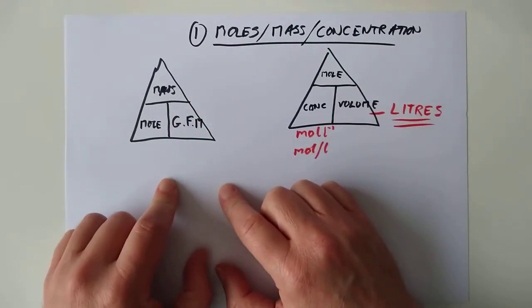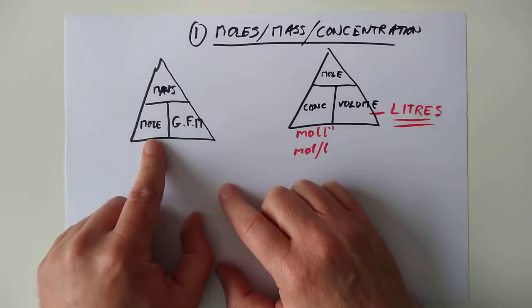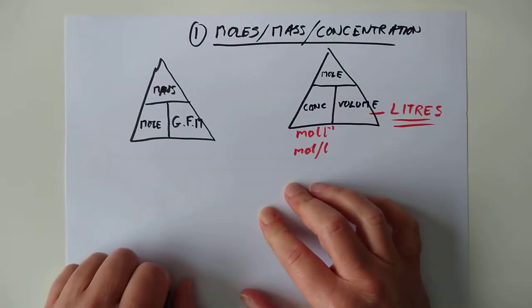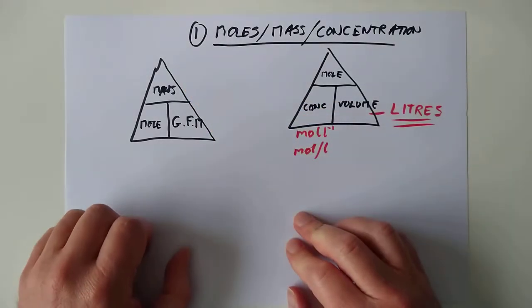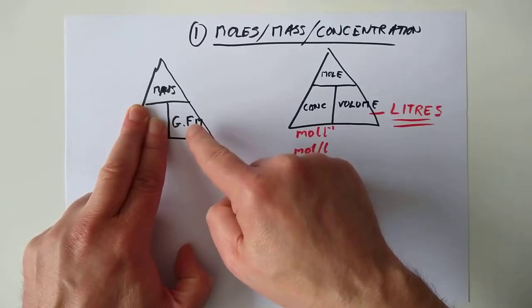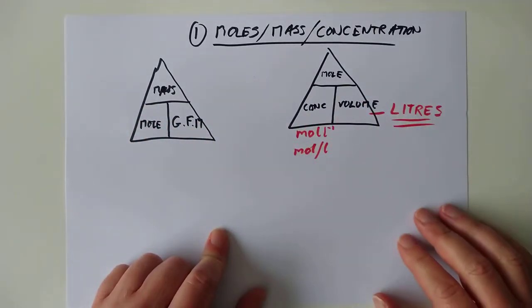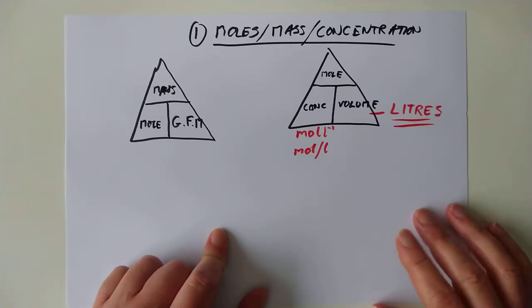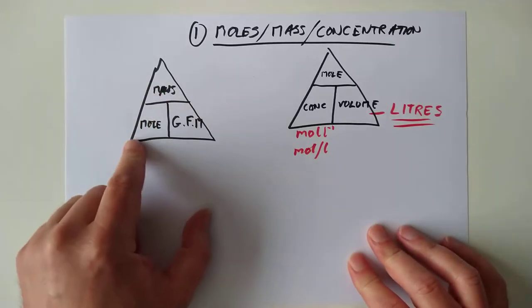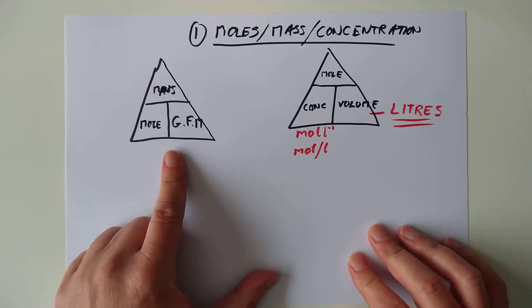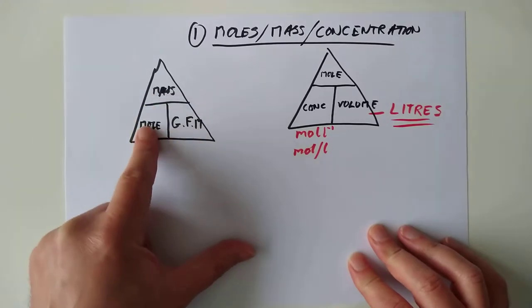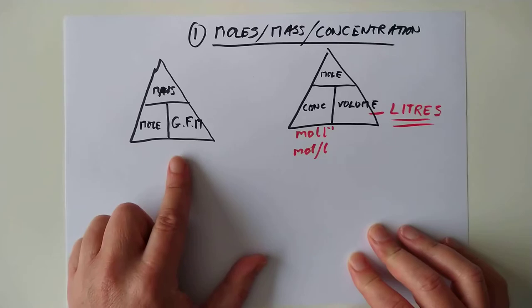For example, if you knew the GFM and the moles, you'd want to know the mass. So you'd cover up mass and it's moles times GFM. Or if you knew the mass and the GFM and you didn't know the moles, you'd cover up the moles and now it's mass divided by GFM. I think they've used them in maths pretty universally. They are very handy. So for the meantime for National 5, stick to these. Mass, moles, and GFM.